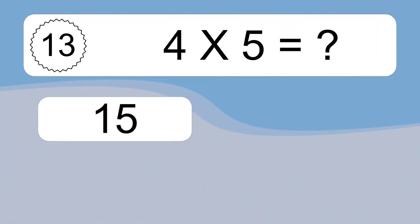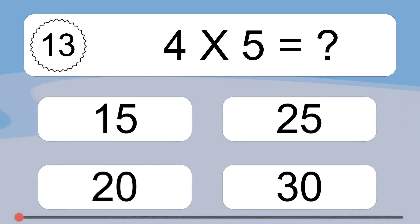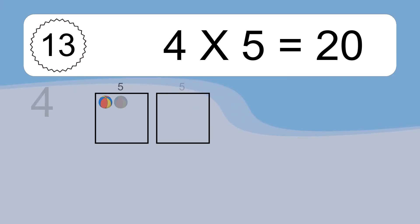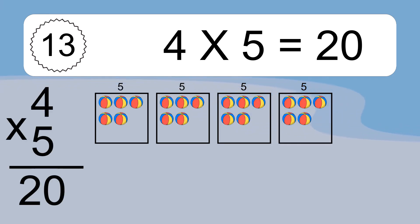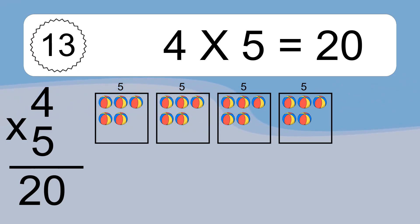Four times five equals what? Four times five equals 20. We have four boxes and each box has five colorful balls inside. If you count all the balls in all the boxes together, you will have four times five balls. This equals 20 balls.